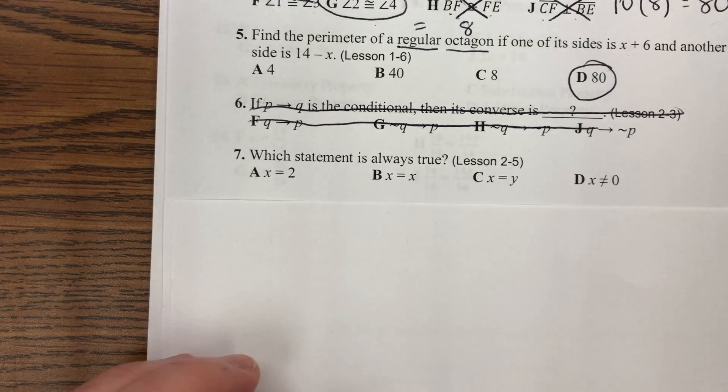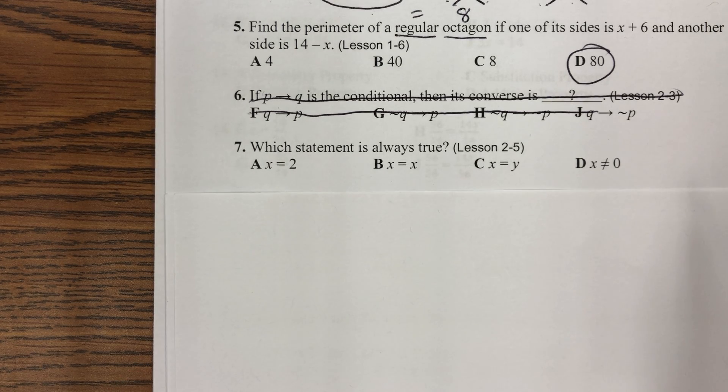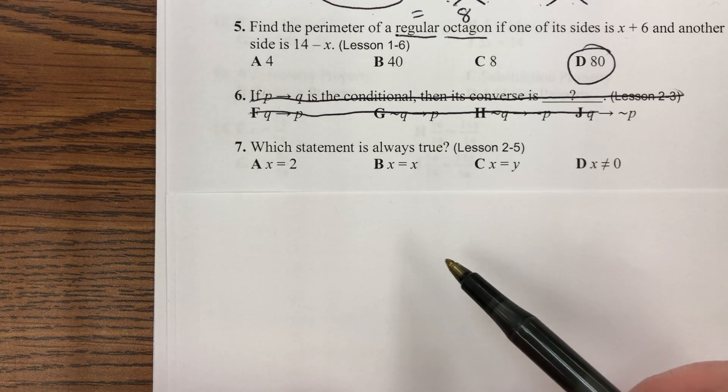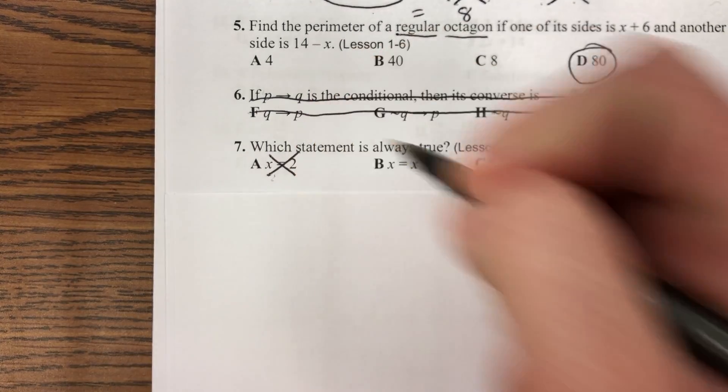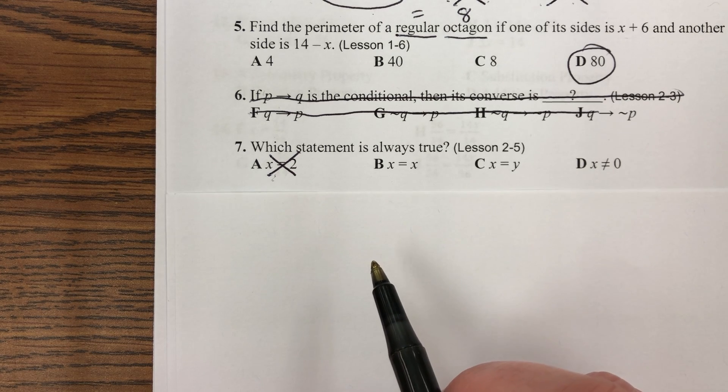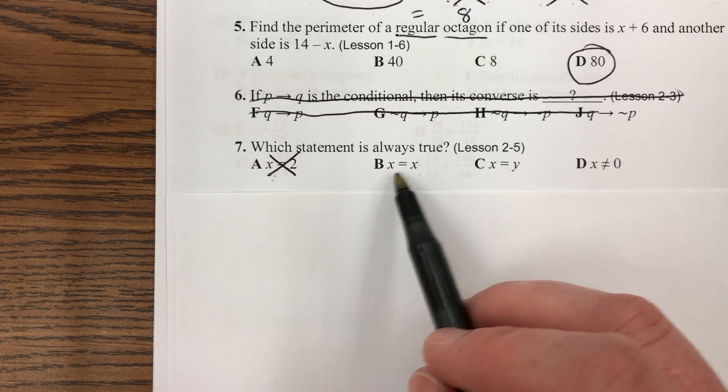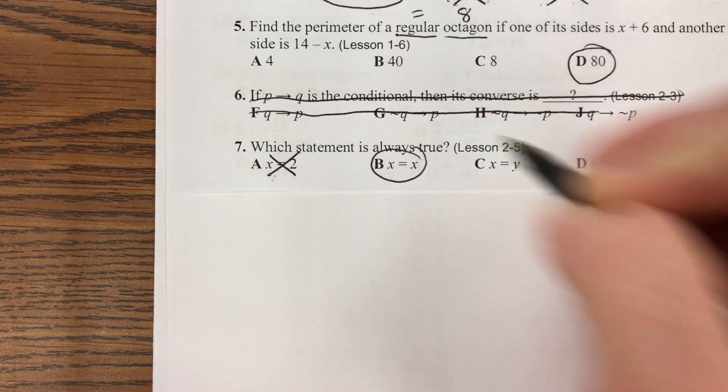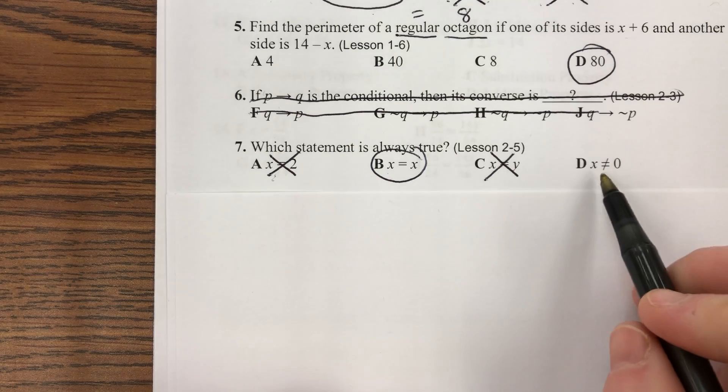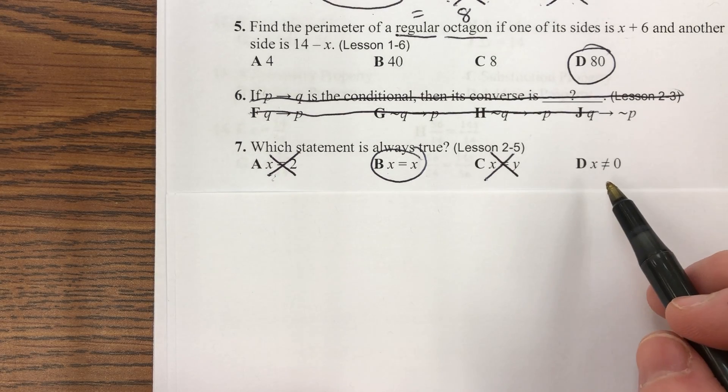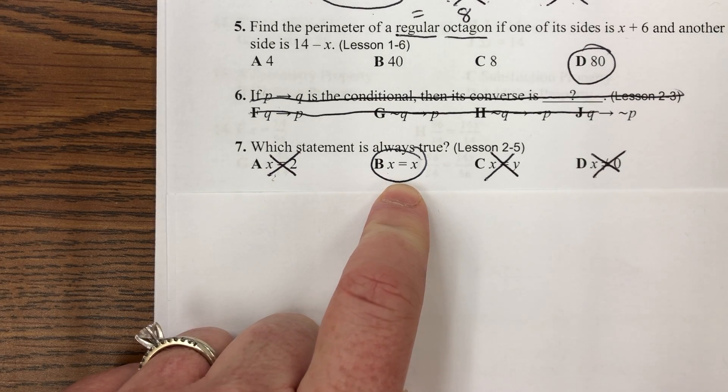Which statement is always true? We can kind of use logical thinking here. Is it always true that X equals 2? No, X could equal anything. That's not always true. Is it always true that X equals itself? Yes, if X is 17, it's going to be equal to 17. If X is negative one half, it's going to be equal to negative one half. That is always true. Is X always equal to Y? Sometimes, but not always. And is X never zero? Is that always true that X can't be zero? No, X can be zero all day long. So the only one that we know is always true is B.